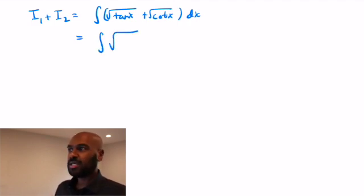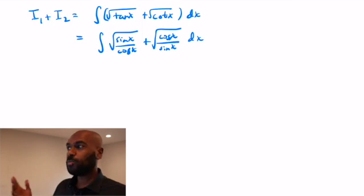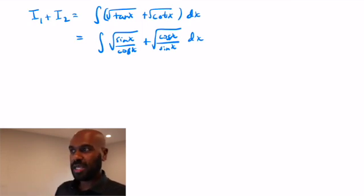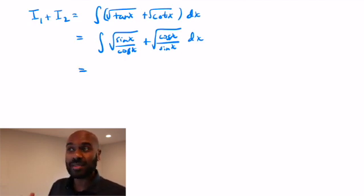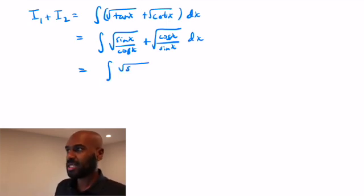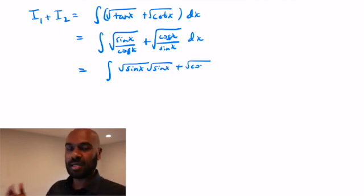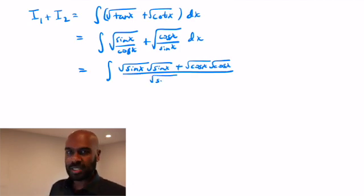A natural thing to do now is to write these in terms of sine and cosine. So we'll have the square root of sine x over cosine x plus the square root of cosine x over sine x dx. Then we put these into a common denominator. We get root sine x times root sine x plus root cosine x times root cosine x, all divided by the square root of sine x times the square root of cosine x dx.